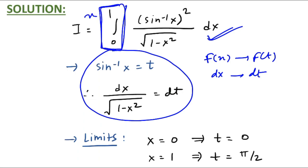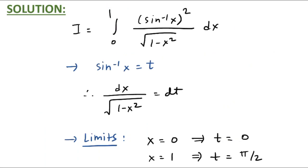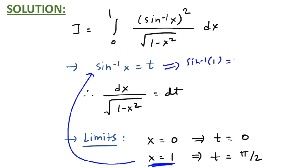The x variable limits go from 0 to 1. When converting from x to t, you must also change the limits. When x is 0: sine inverse 0 equals t, and sine inverse of 0 is 0, so t equals 0. When x equals 1: sine inverse 1 equals t, which means sine inverse of sine(π/2) equals t, therefore t equals π/2. The limits change from 0 to π/2.